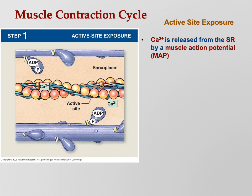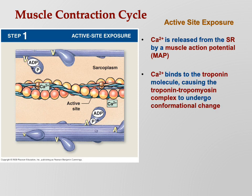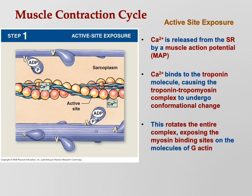Calcium is now floating around inside the sarcomere and will push the troponin-tropomyosin out of the way. More precisely, calcium binds to the troponin, causing the protein to undergo a conformational change - it essentially rotates out of the way. Calcium binds to troponin, causing the troponin-tropomyosin complex to undergo the conformational change that exposes the myosin binding sites on the molecules of G-actin. The energized myosin head is now ready to grab actin.